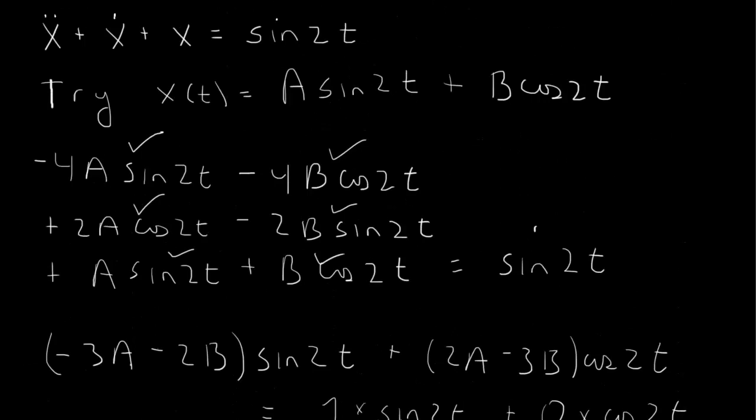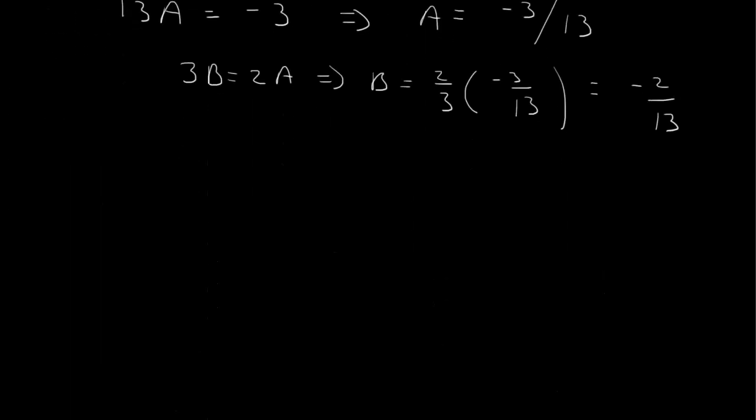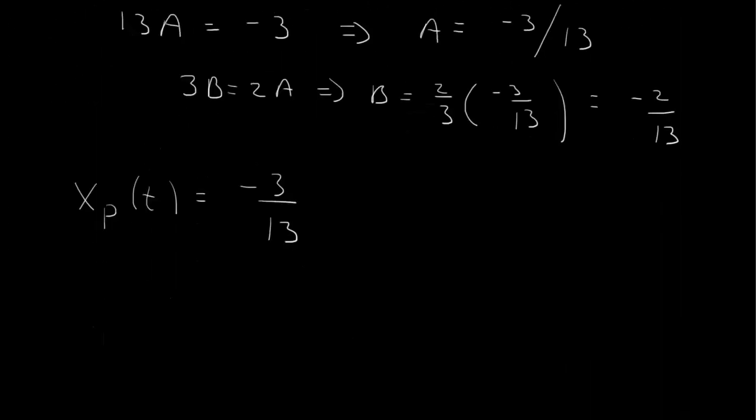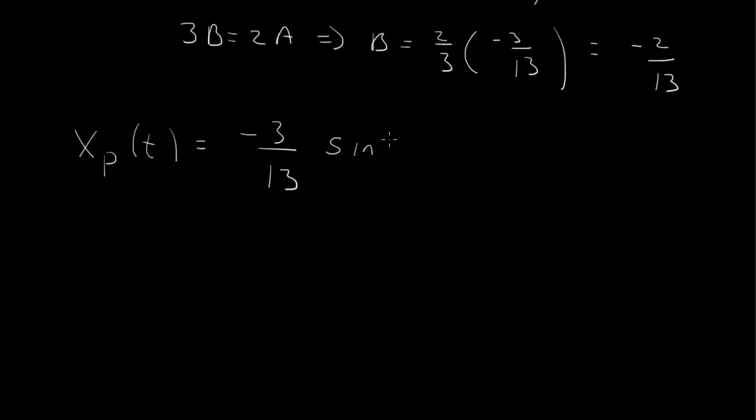Our solution was a sine 2t plus b cosine 2t. So we get x sub p of t then is equal to minus 3 over 13—that's our sine term, that's a is the sine 2t—sine 2t, plus b, which is minus 2 over 13 cosine 2t. That's our particular solution.